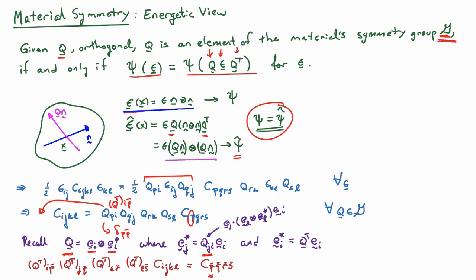Let's observe one additional important fact, and that is if I look at Q transpose IP bar times a set of components EI. I can expand the Q transpose IP bar, that's EP bar star dotted with EI multiplied by my component.